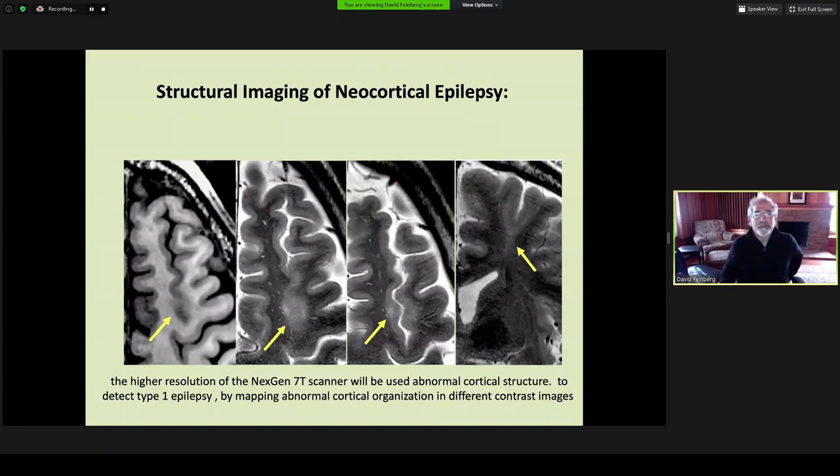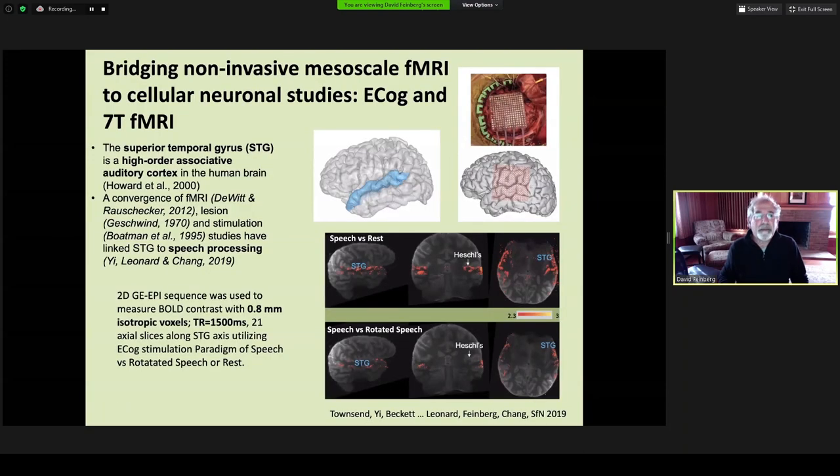The scanner will also be used for medical research eventually. Structural imaging is very critical for examples looking at epilepsy, structural abnormalities and changes. It will also be used to bridge non-invasive mesoscale fMRI to cellular neuronal studies, as we have piloted some studies with Dr. Eddie Chang's lab at UCSF, looking at ECoG and 7T fMRI in superior temporal gyrus, looking at higher order associative auditory cortex.